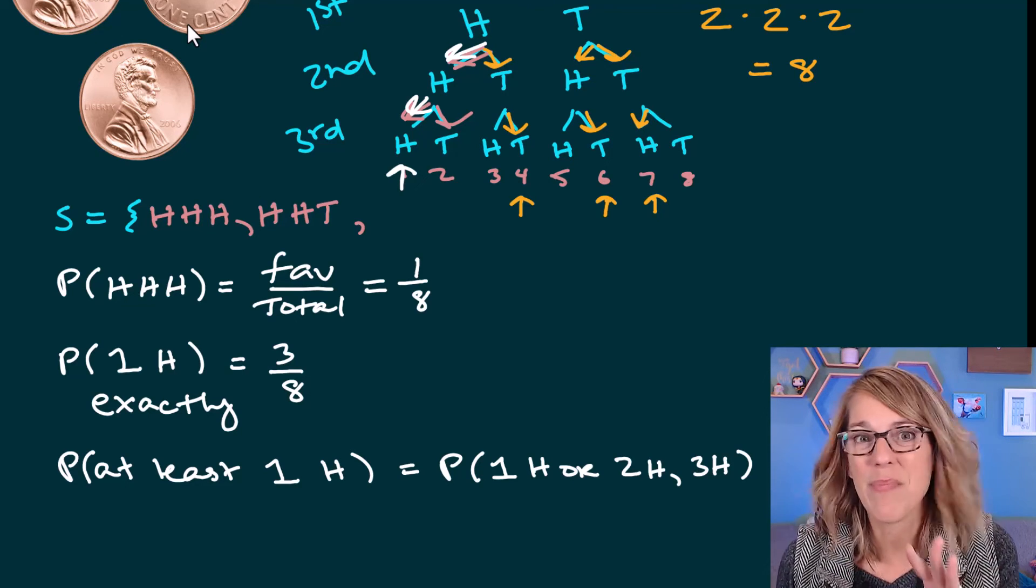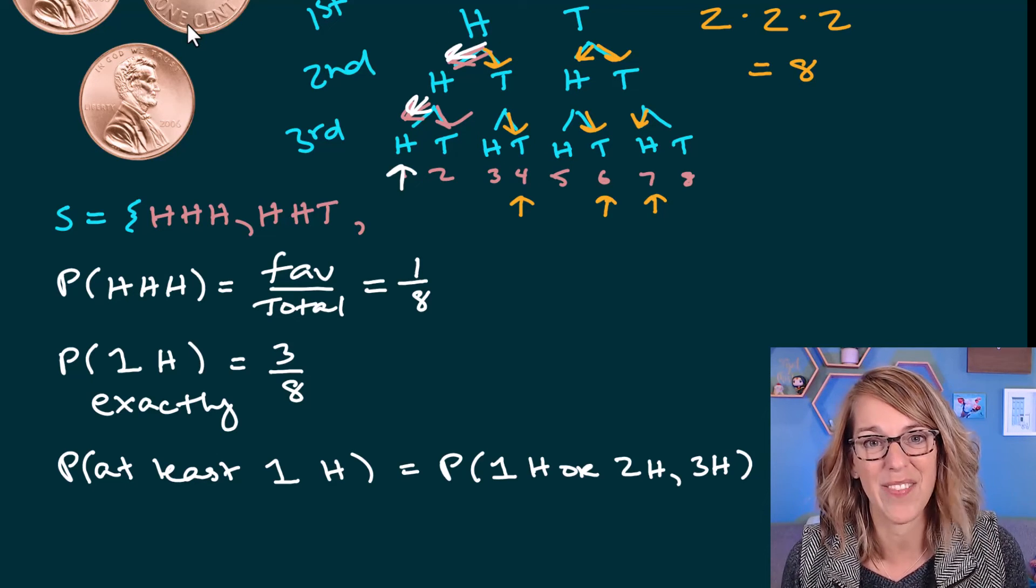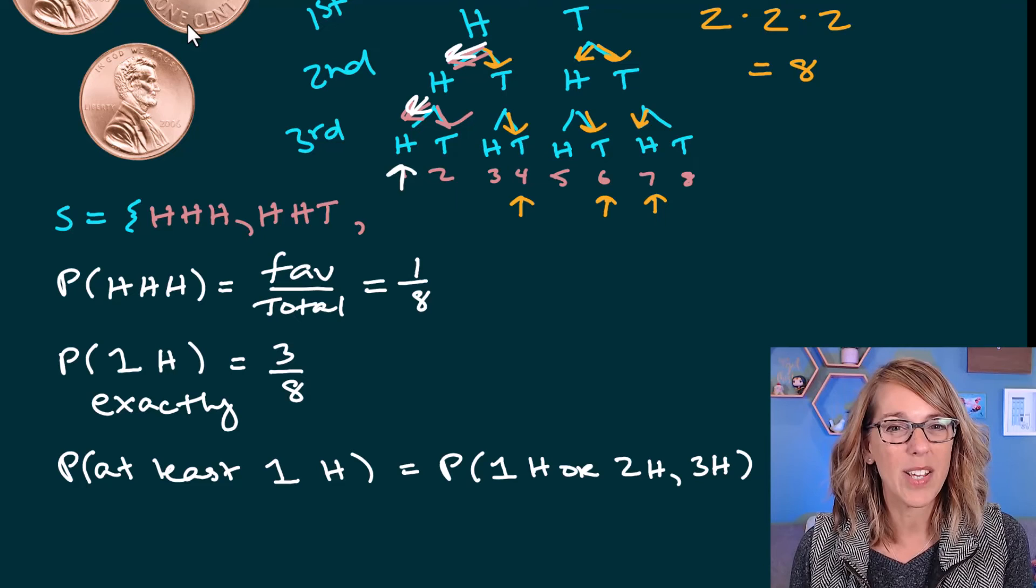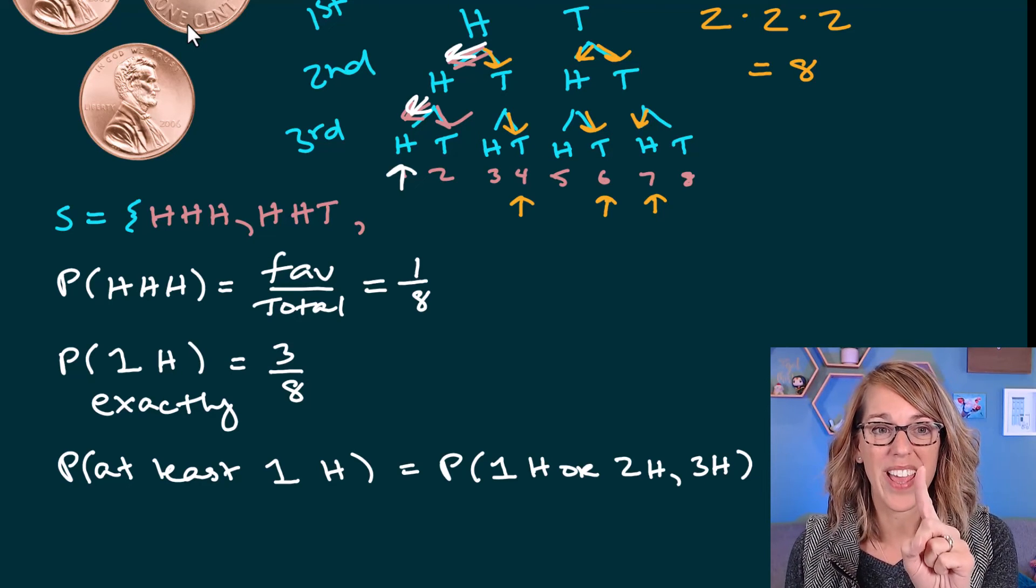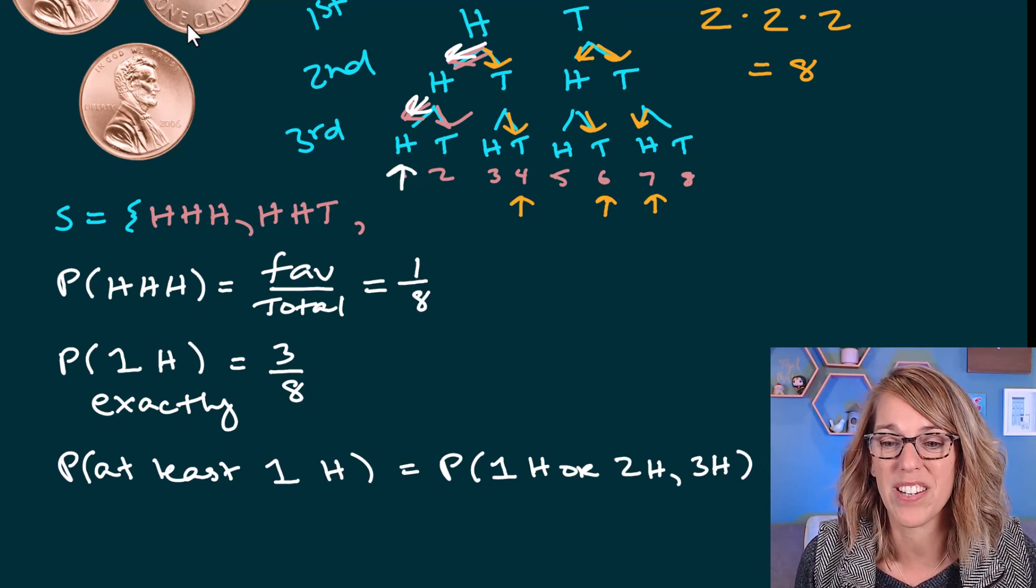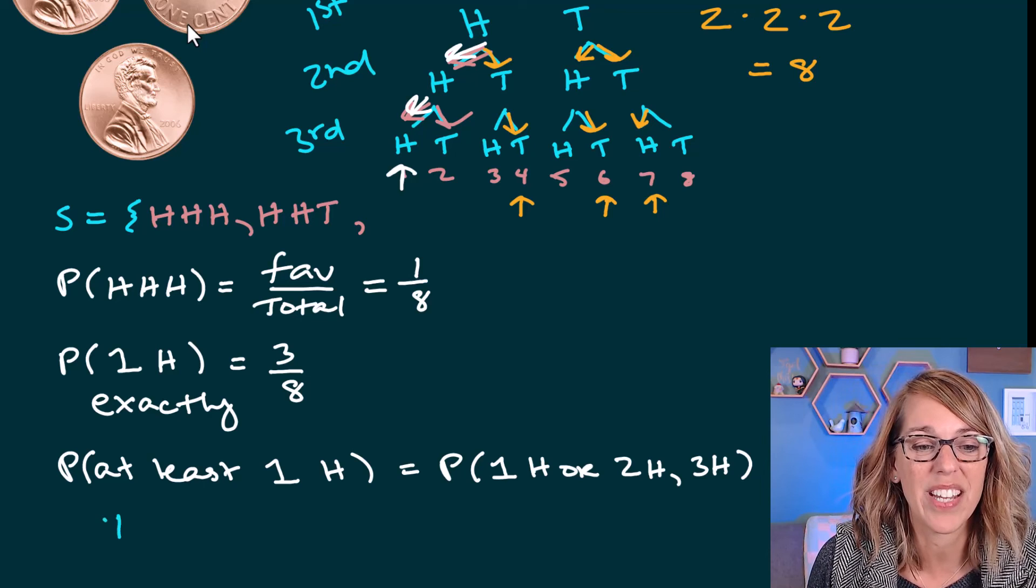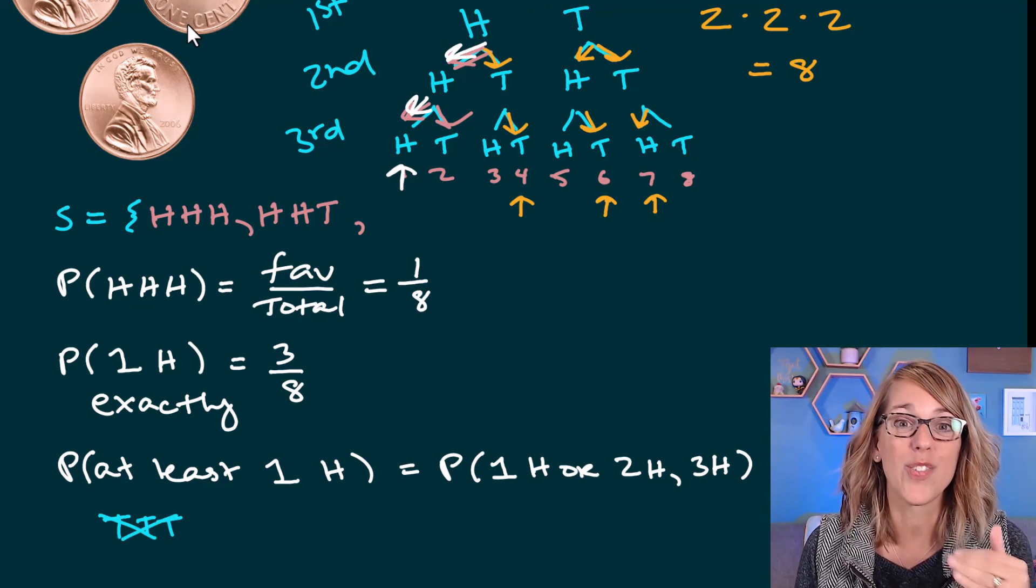So I've got three possible cases there with a lot of different branchings to have to add up. Instead, let's think about the only case that we don't want. If I want at least one head, that means that I'm never going to have the case in my favorable outcomes here. I am not counting tail, tail, tail. This is the one that I don't want.